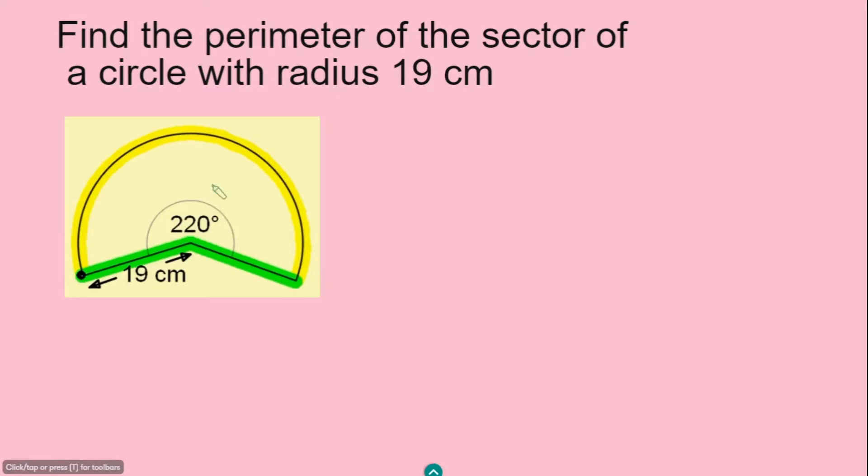Now the arc length, that is the yellow curve part here, arc length can be calculated with this formula: theta, which represents the angle made at the center, divided by 360 degrees, times 2 pi r, the radius.